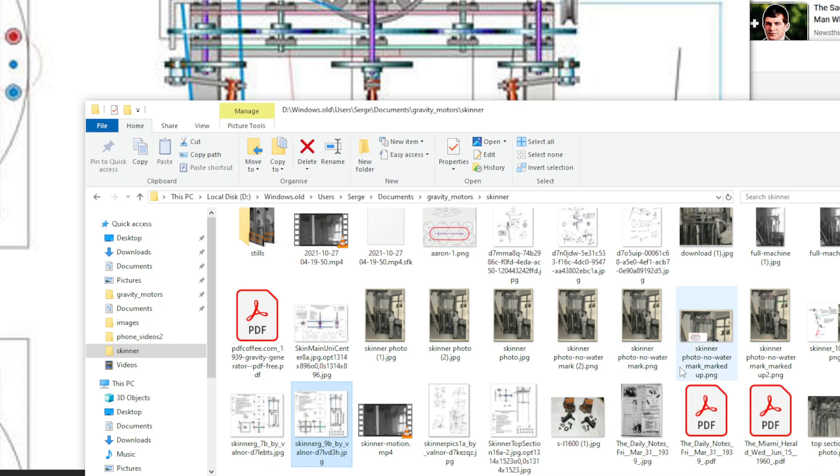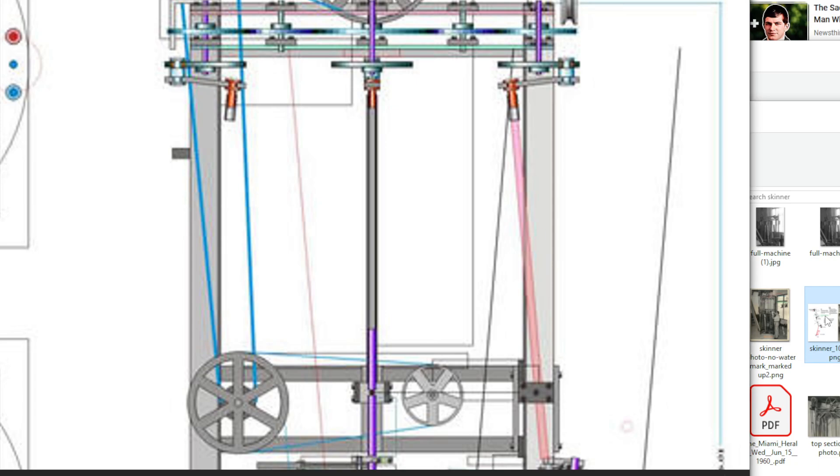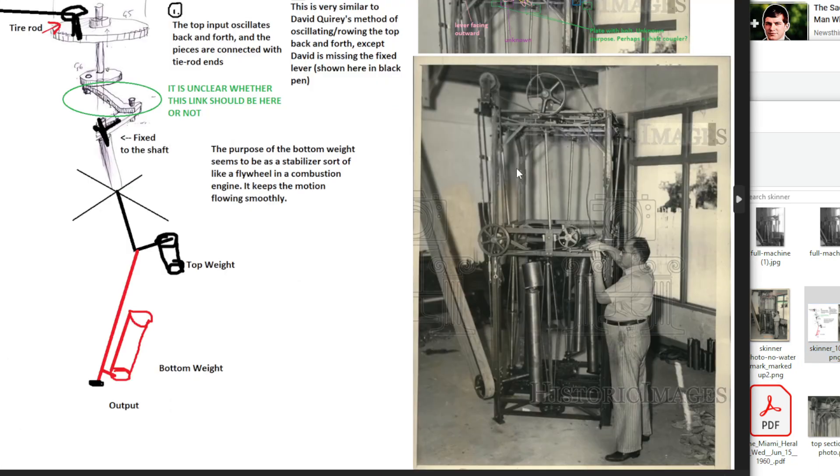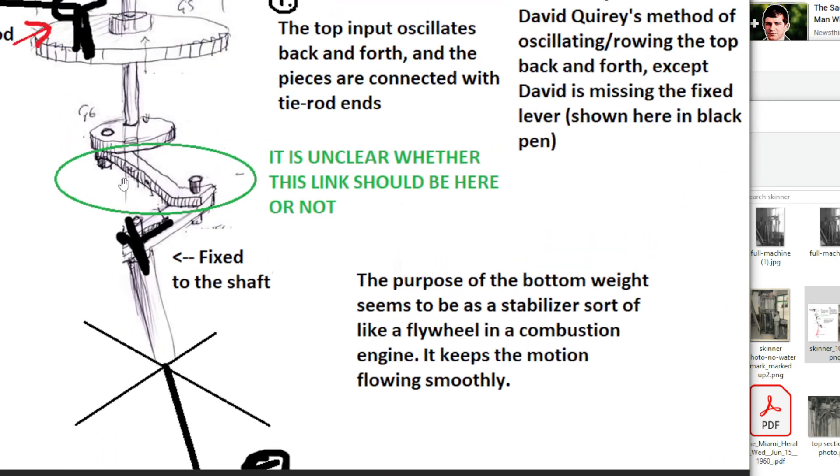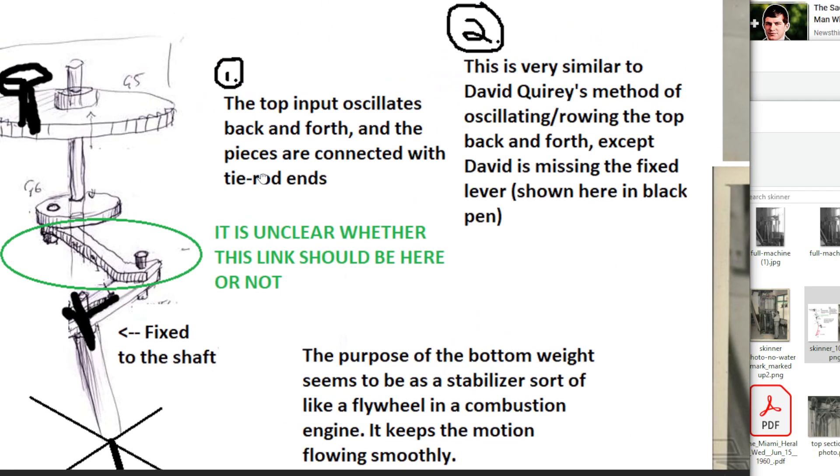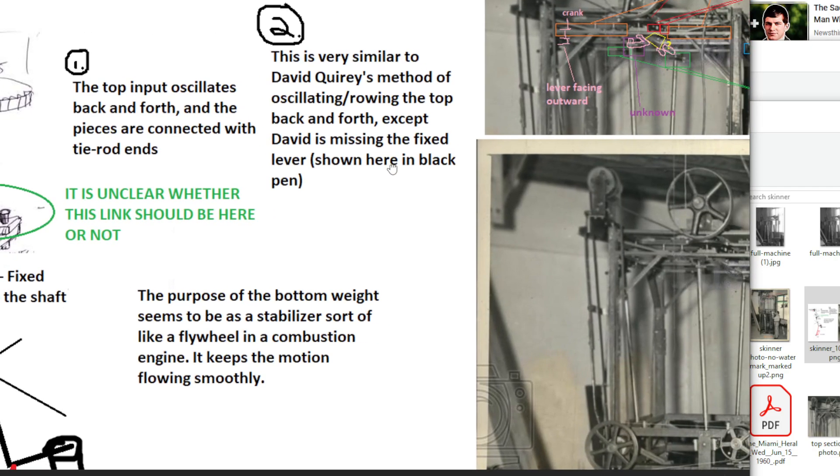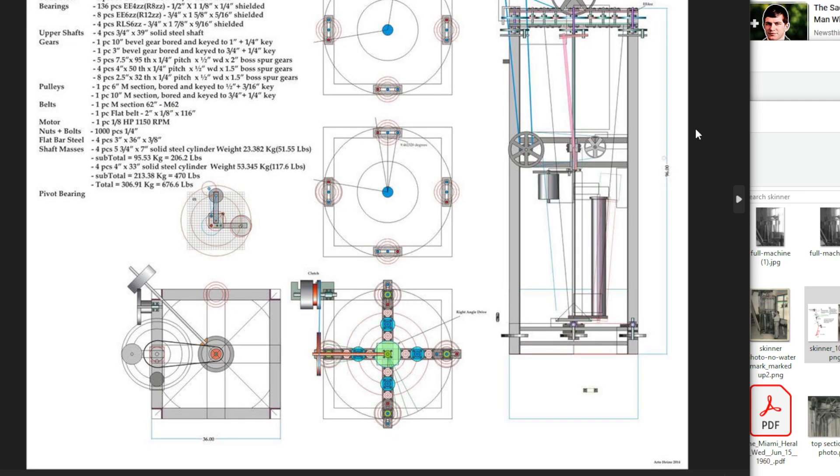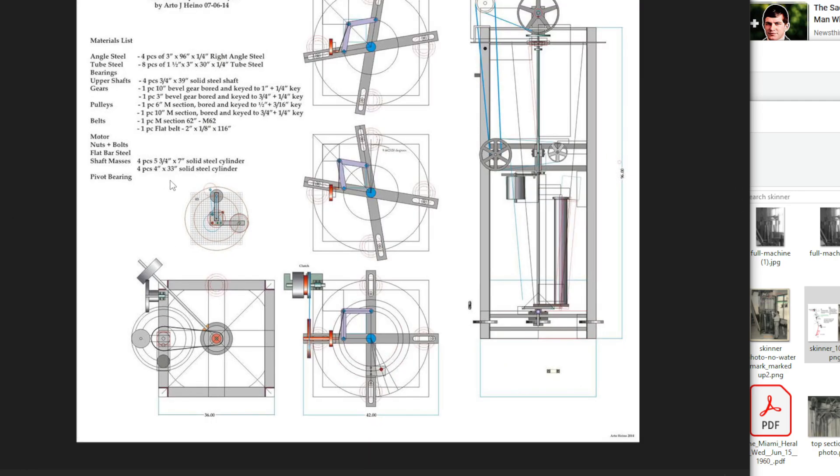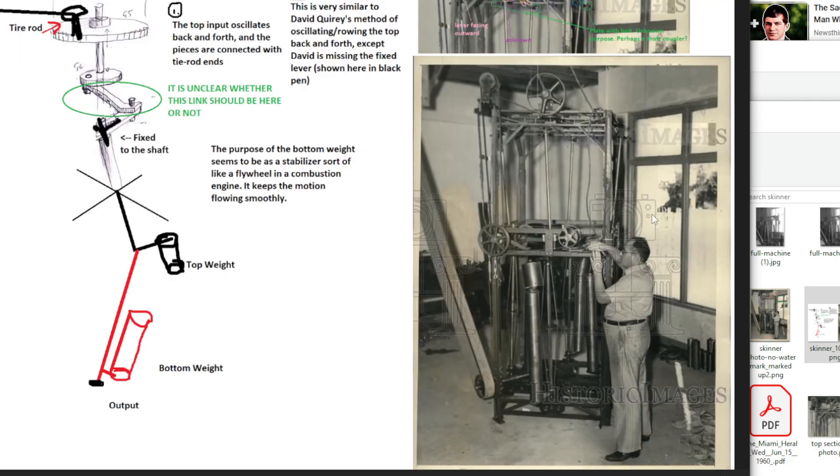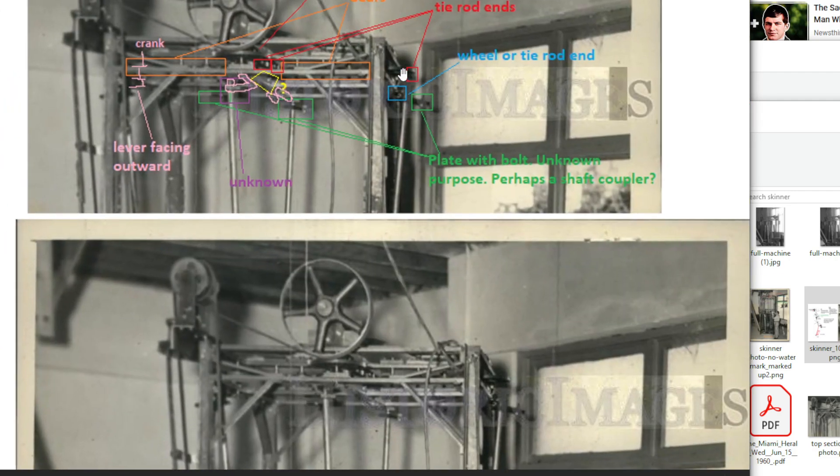So let's open up this highly technical drawing that I did. So it seems like there's an intermediate piece here. But what's important is the input oscillates back and forth. It's connected with tie rods and linkages. You almost have to go crazy to see it, but it's where you're insane.